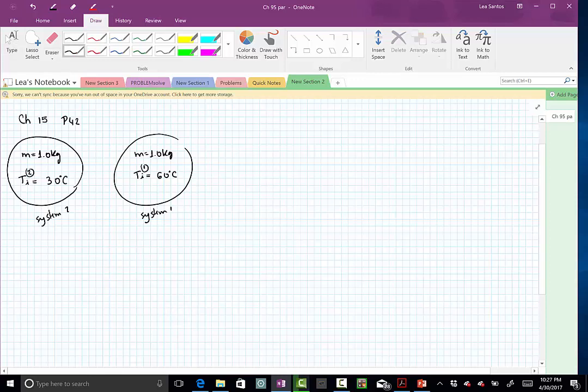We put both in contact, they will reach equilibrium. They are completely insulated, like in a calorimeter, so there is no exchange with any environment. And we want to estimate the net change in entropy of this system.